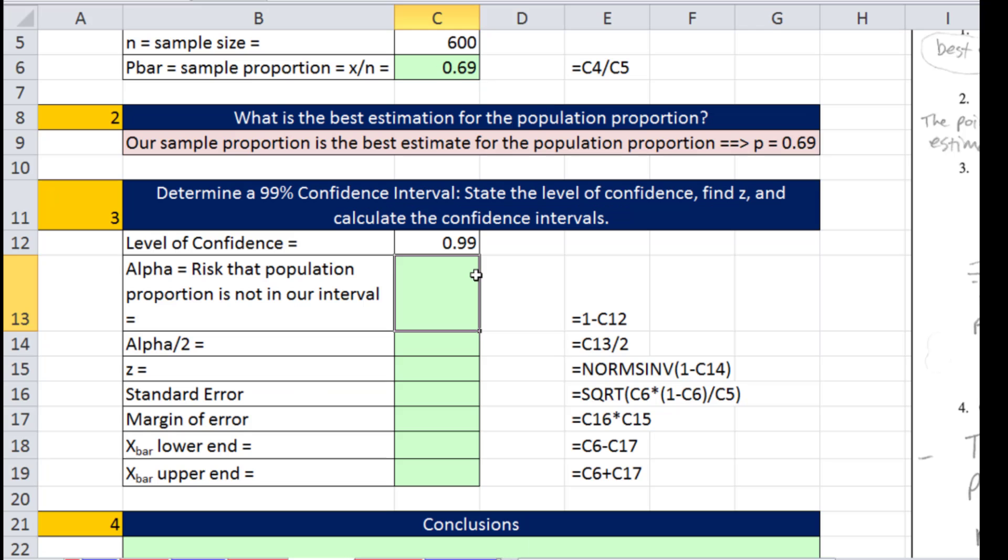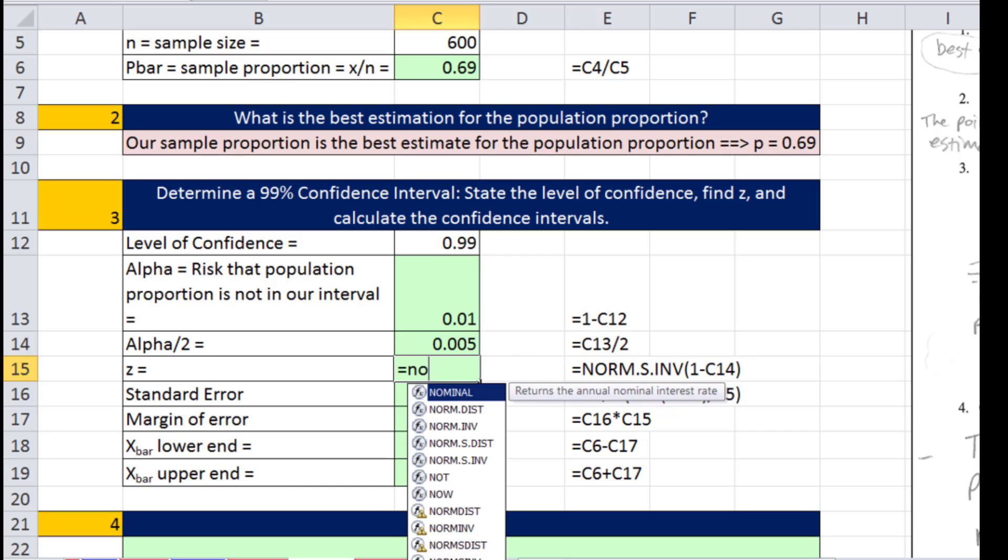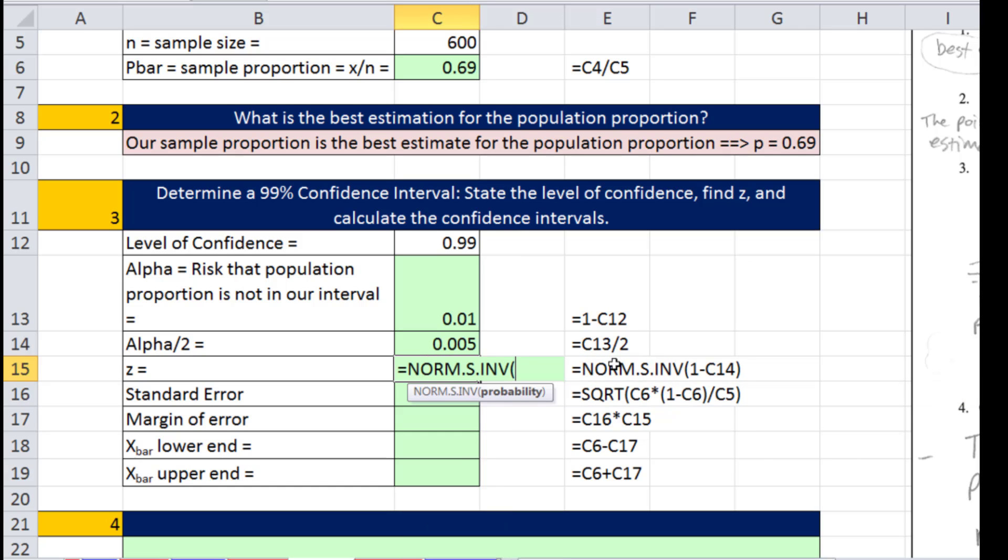We have our p-bar. Level of confidence, let's do 0.99 - we want to be really sure. We have 1% risk, that alpha, so 1 minus that. Alpha divided by 2 is a half a percent, or 0.005. Our z - we're going to do NORM.S.INVERSE. Inverse wants a probability. This is a teeny little bit of risk on the upper end, so I'm going to say 1 minus that. So 2.57, that's our z.